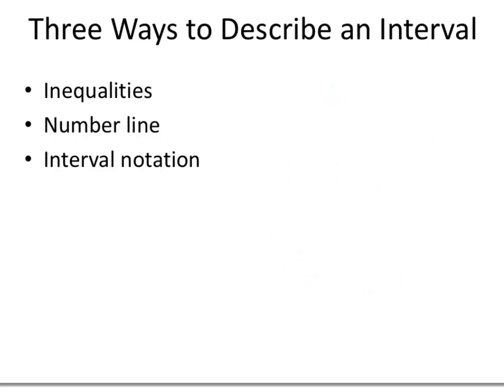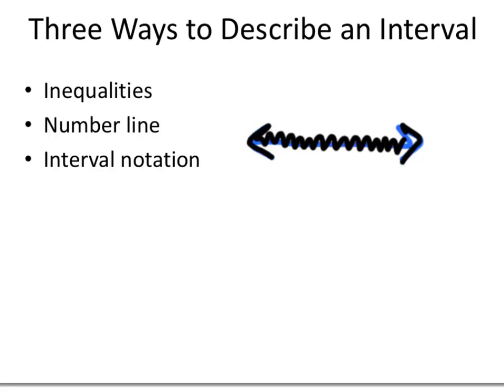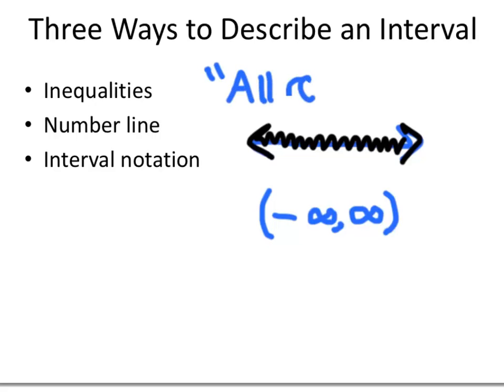There's one other interval we haven't talked about: the interval that includes all numbers on the number line. There's no real way to write that with a single inequality — we simply describe this set as all real numbers. On the number line, we shade everything. In interval notation, we write (−∞, ∞), and we never include square brackets because neither negative nor positive infinity are real numbers — they just say we go on forever in both directions.